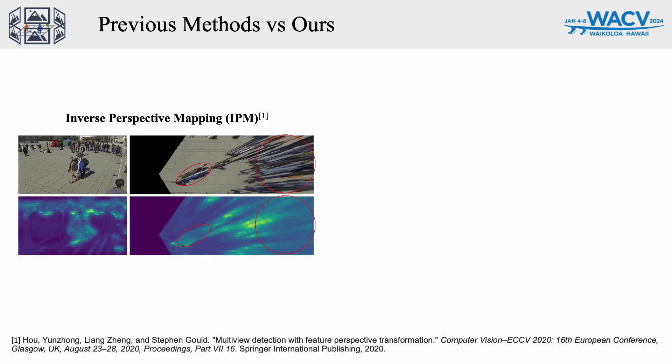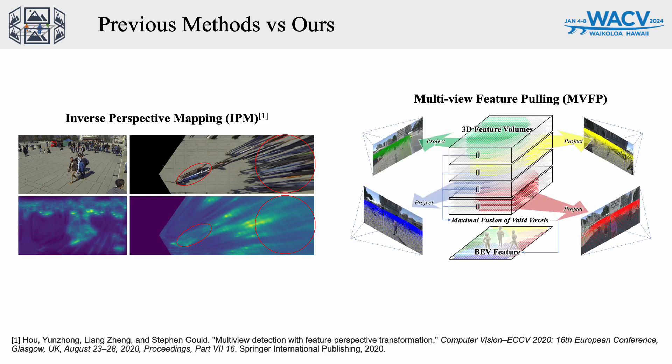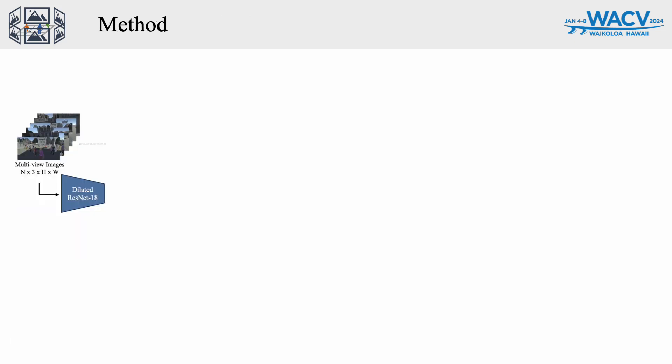Prior multi-view detection methods rely on directly projecting the perspective view features into the ground plane. However, this IPM approach can cause the loss of information along the human body and result in the mixture of features from different individuals. Our multi-view feature pulling method uses the efficient 3D feature pulling mechanism that converts the multi-view features into a unified 3D space, providing a more comprehensive representation of the scene.